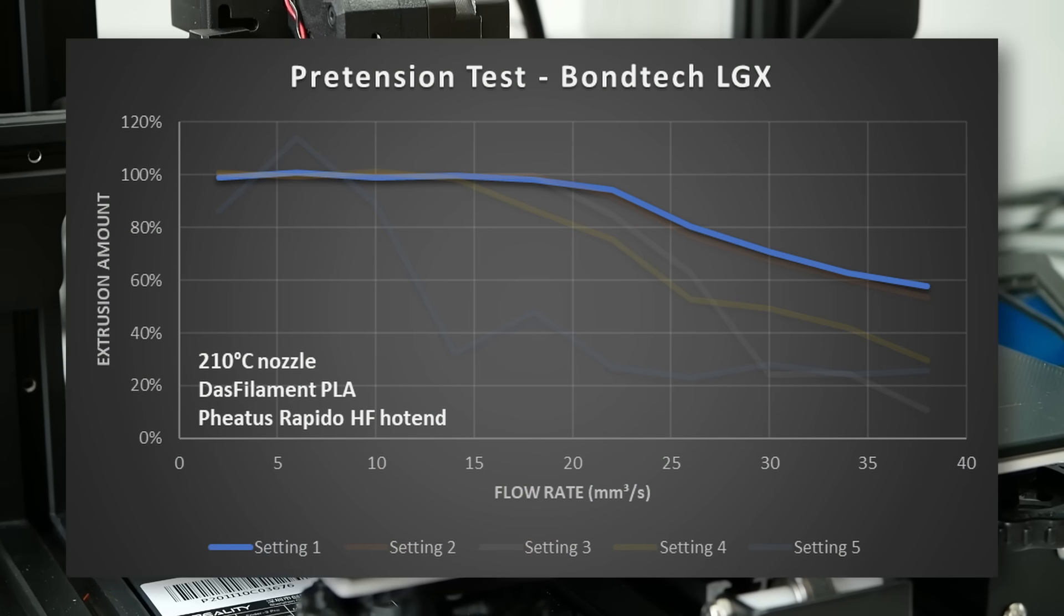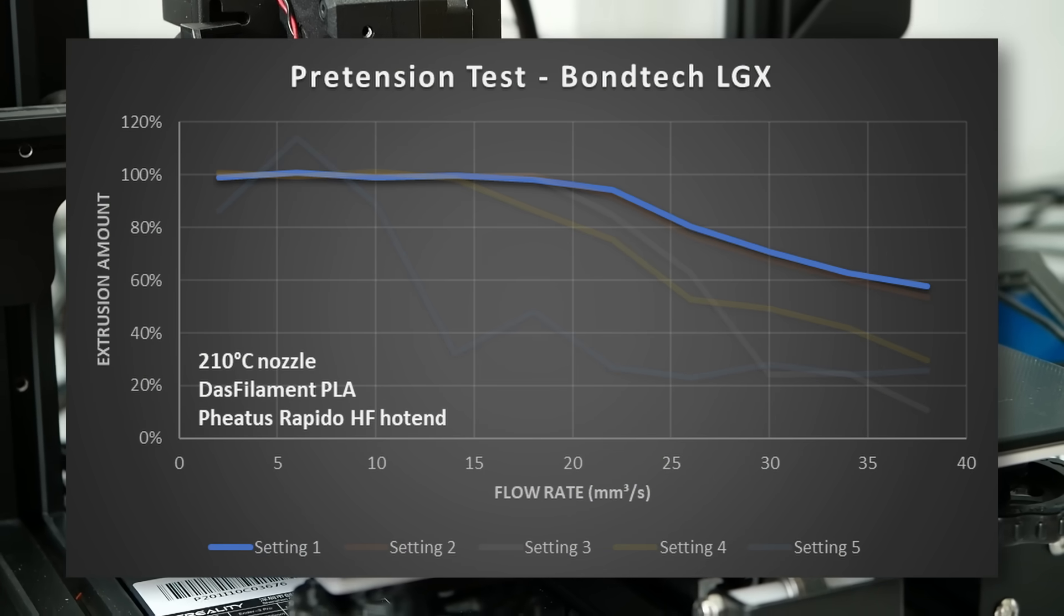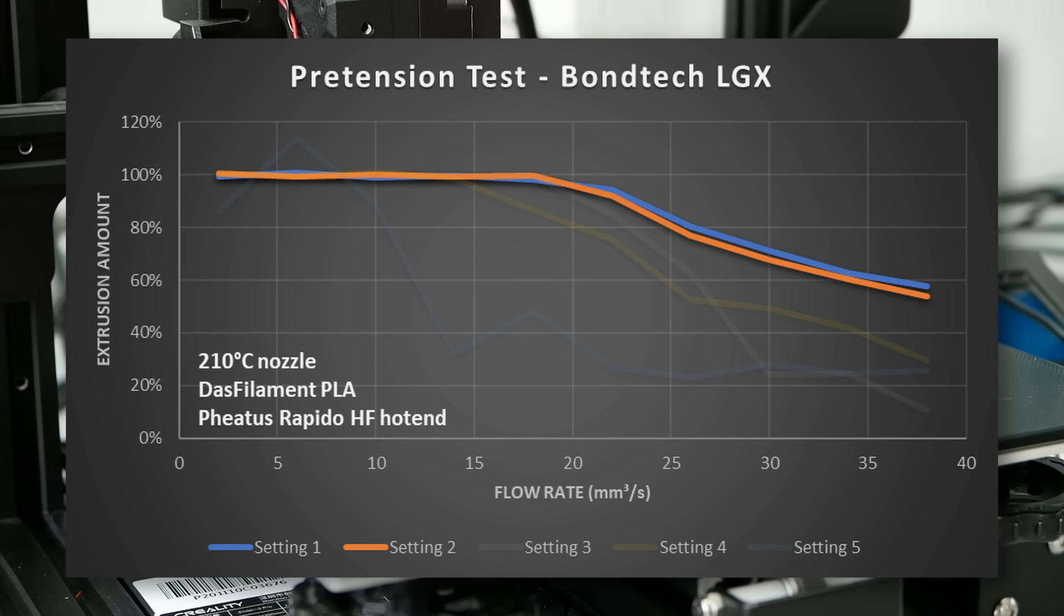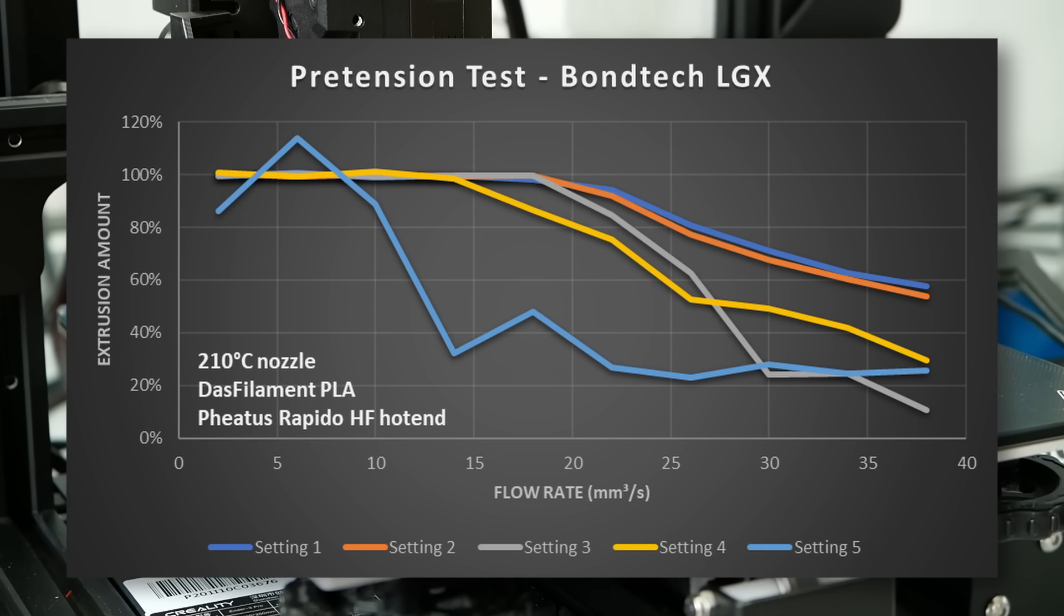In setting 1, I got really consistent results over a vast flow range until the extruder started skipping. Setting 2 was still good with slightly worse performance at higher flows. Anything more and the results were devastating.